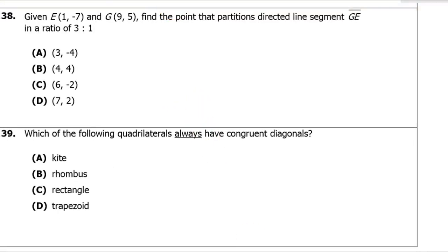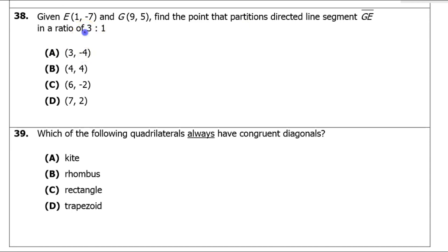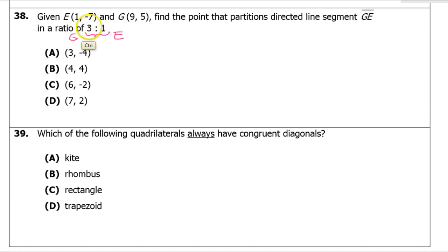For number 38, we're given two endpoints and need to find the point that partitions the directed line segment GE into the ratio 3 to 1. Three plus one is four, giving us two fractions: three-fourths and one-fourth. The three-fourths goes with G and the one-fourth goes with E.